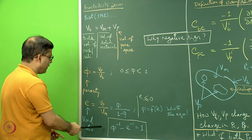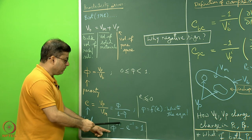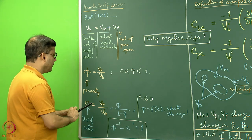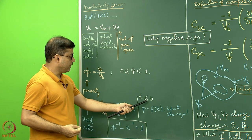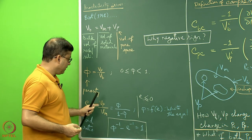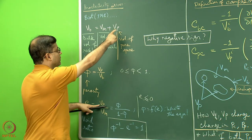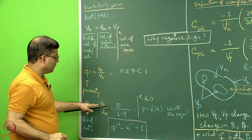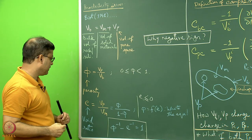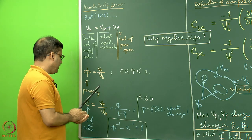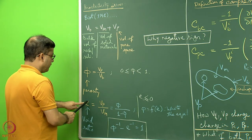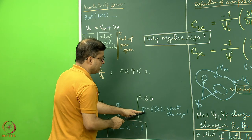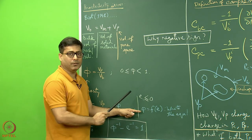We can also find with little effort that phi-inverse minus E-inverse equals 1. The void ratio can become 0 when Vp equals 0, or it can be more than 0 — some positive number. Since E is written as a function of phi, you can also write phi as a function of E — write down that equation.